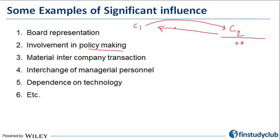Point three: when there is a material intercompany transaction. For example, in case of real estate there could be a heavy exchange of land bank. Land bank is the most critical asset for a real estate company, and such a material transaction happening between two companies gives you a sense that there are undercurrents of significant influence.